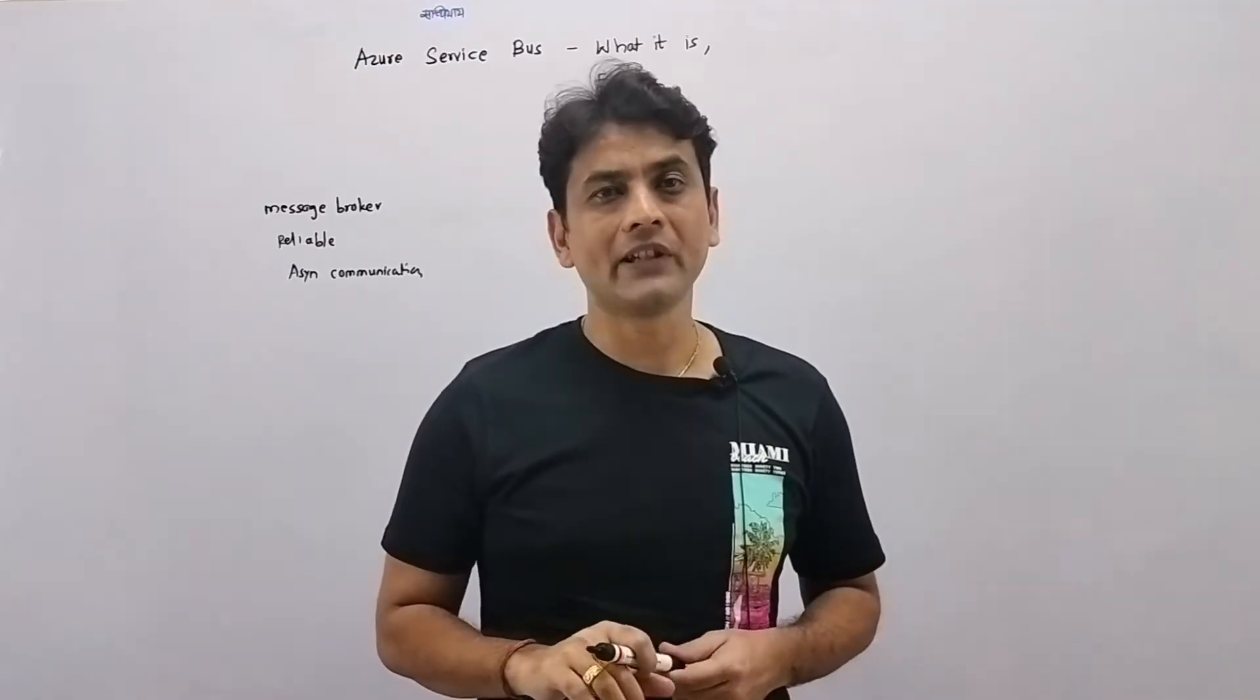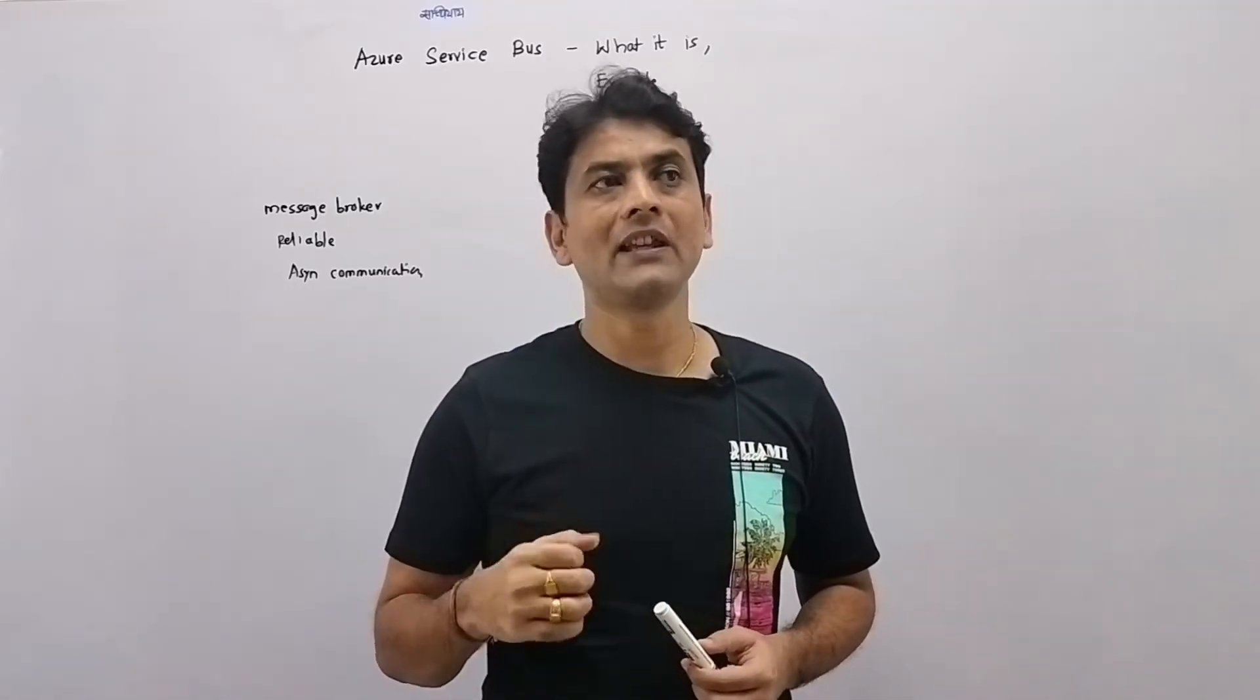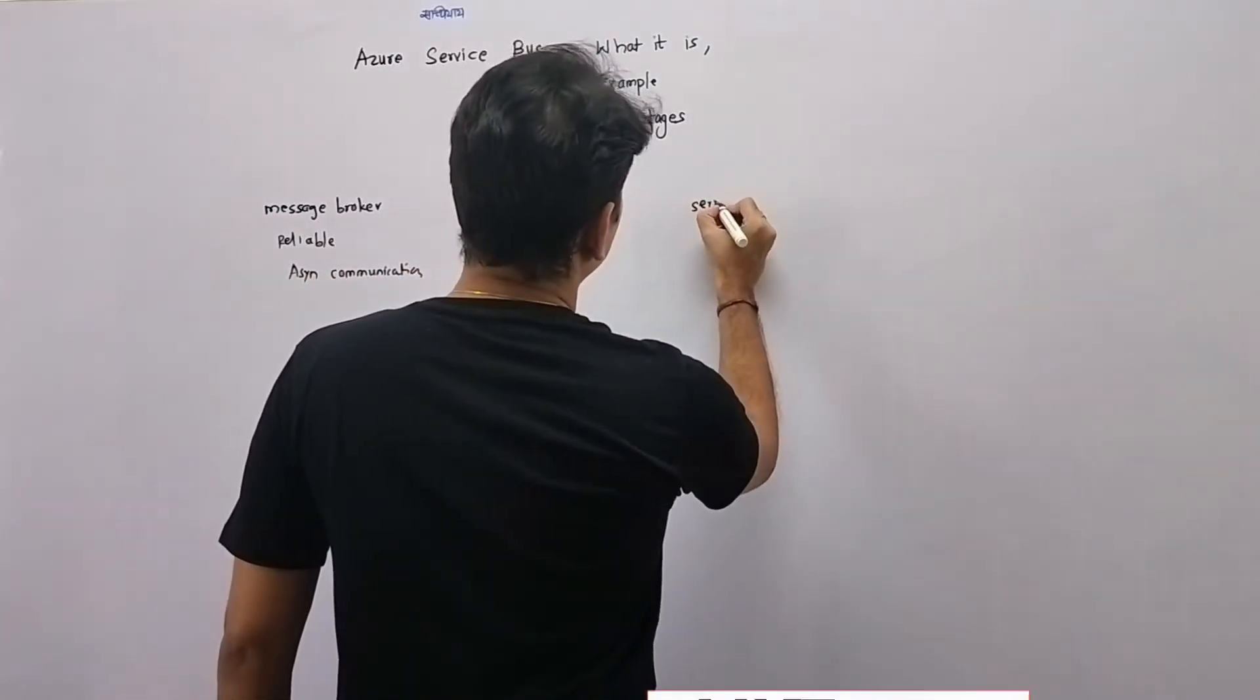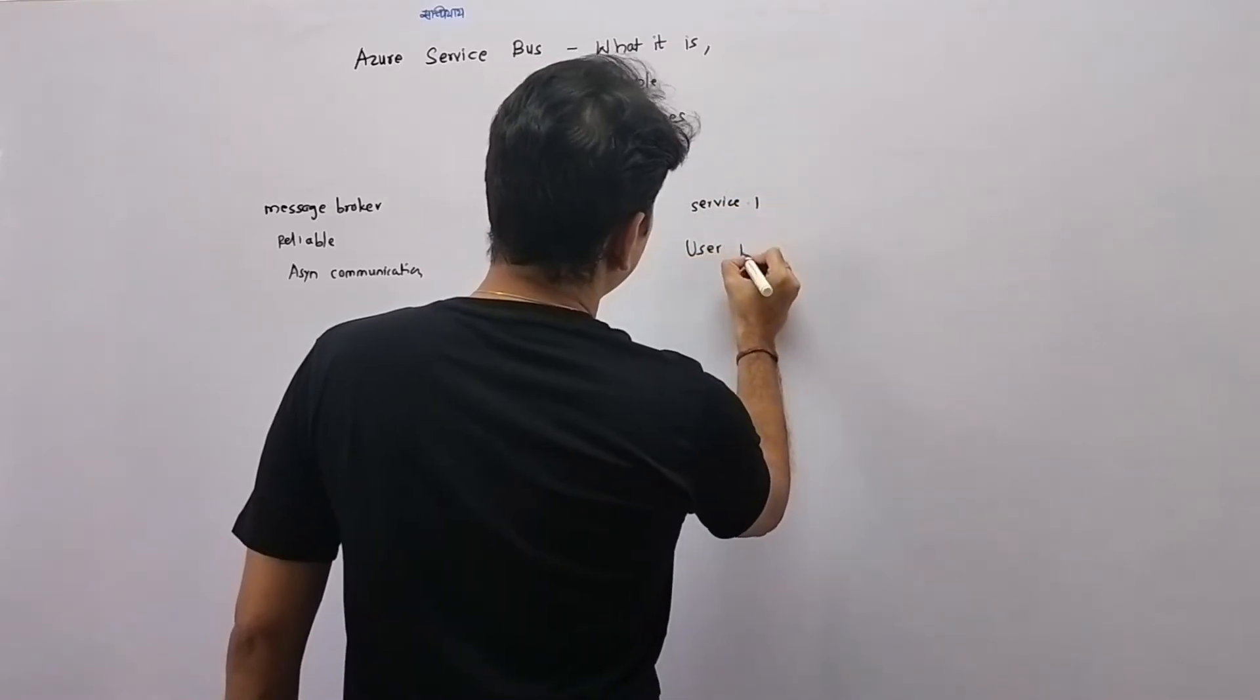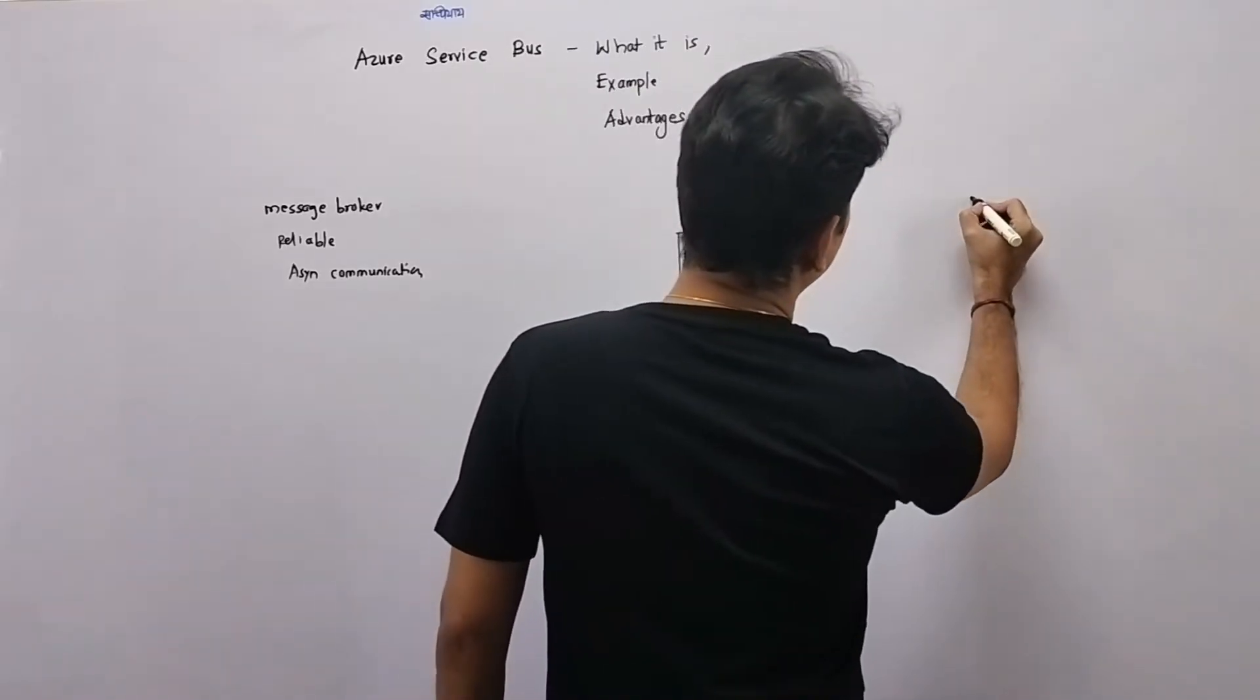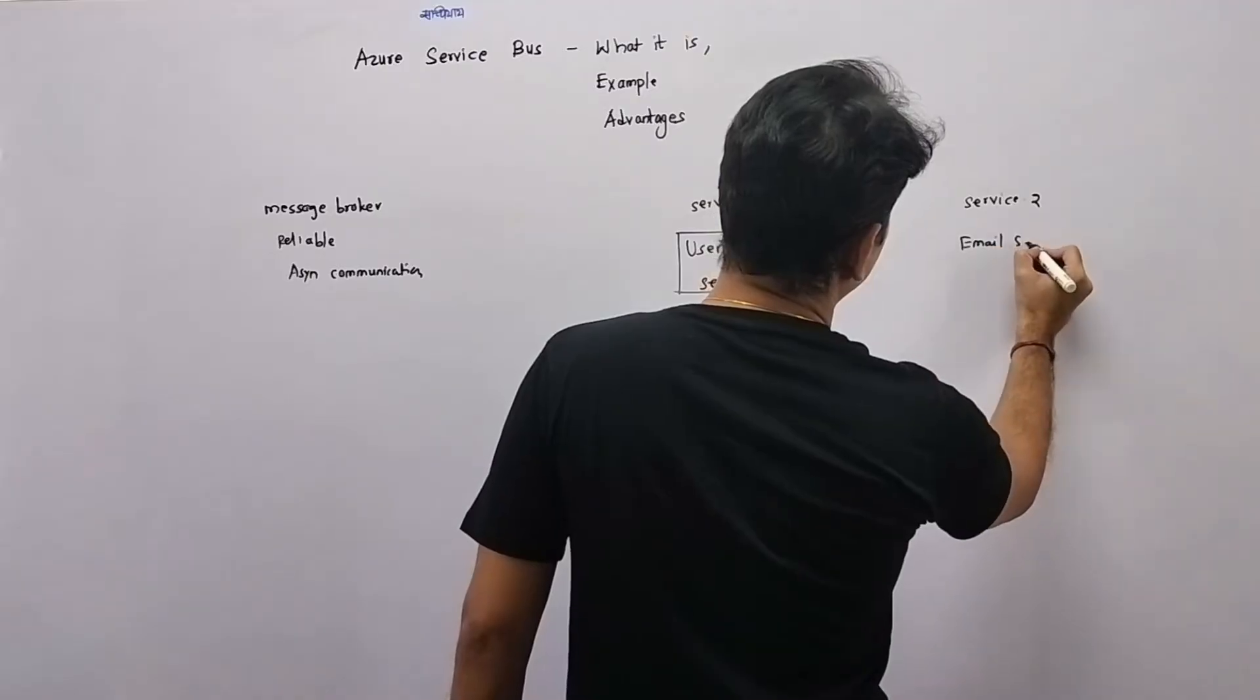Say we have an application where user can register himself. And after registering, user gets an email, say a welcome email. So in that case, we may have two services. Service one, we may have this user registration service. And then we may have service two, that is email service or email sender service.